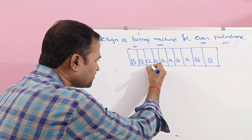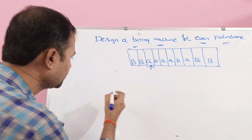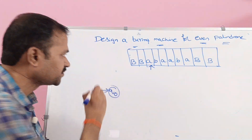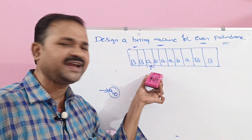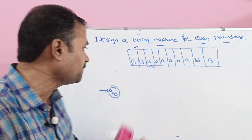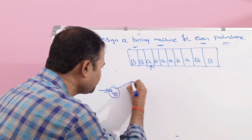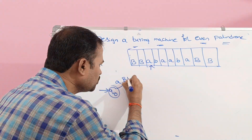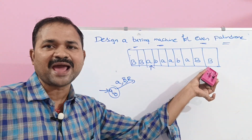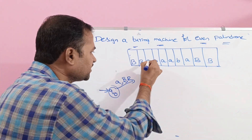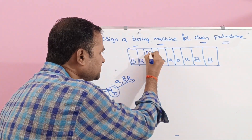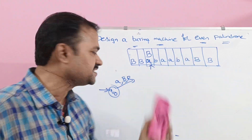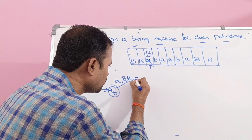Initially we are at the first symbol, which is A. Let the starting state be Q0. On Q0, if we read A, then replace that A with a blank symbol and move the head towards the right until we get the blank symbol. So here we have A replaced with blank, and we need to move the head towards the right till we get the blank symbol. Now change the state from Q0 to Q1.